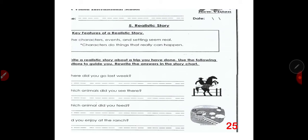Write a realistic story about a trip you have done. Use the following questions to guide you. Rewrite the question in the story chart. There is a story chart. After this, or at the back of this page, you can find the story chart. But, first, before you answer, you have to answer first, or write your answer in each question. So, there is a particular picture you see in your booklet. This is actually your guide for you to answer the questions.